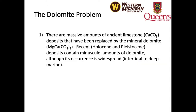The 'dolomite problem' was introduced by Van Tuyl back in 1916 and comprises two parts. First, there are massive amounts of ancient limestones — calcium carbonate deposits — that have been replaced by the mineral dolomite, which is magnesium-bearing. However, recent Holocene and Pleistocene deposits contain minuscule amounts of dolomite, although its occurrence is widespread, including in intertidal settings, open marine settings, and deep water settings.